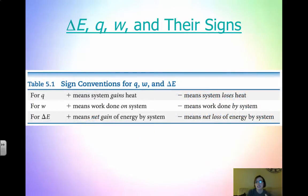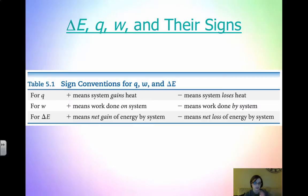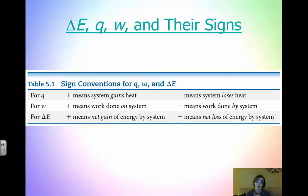Looking at delta E, Q and W and their signs: for Q, heat — if it's positive, the system gains heat; if it's negative, the system loses heat. For W, if it's positive, work is done on the system; if it's negative, work is done by the system. Positive means work is on the system, negative means work is done by the system. For delta E, positive means a net gain of energy, negative means a net loss. Remember that delta E equals Q plus W.